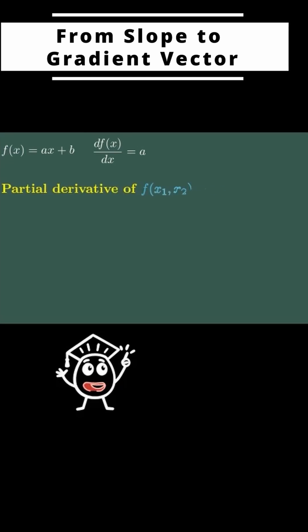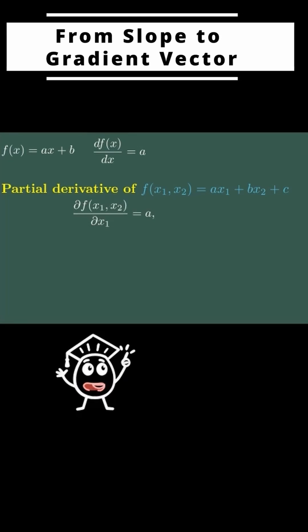Partial derivatives hold one variable constant and wiggle the other. If you differentiate with respect to x1, you get a. If you differentiate with respect to x2, you get b. So partials tell you, how much does price change if I change just the house size or if I only change the school rating?